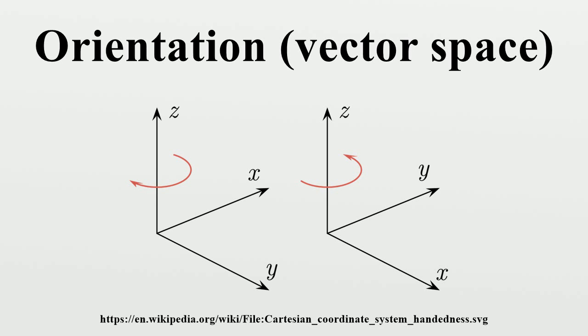However, one would like to know whether it is possible to choose the orientations so that they vary smoothly from point to point. Due to certain topological restrictions, there are situations when this is impossible. A manifold which admits a smooth choice of orientations for its tangent spaces is said to be orientable. See the article on orientability for more on orientations of manifolds.